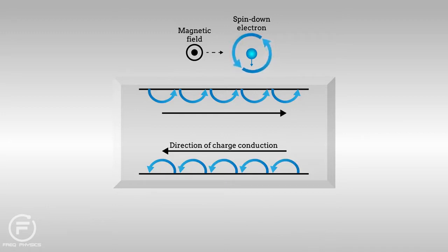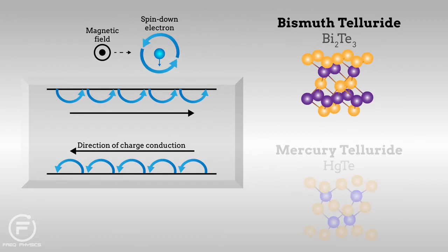The discovery of materials that can behave as topological insulators, such as bismuth telluride and mercury telluride, has greatly simplified how this peculiar charge conduction scheme can be studied.